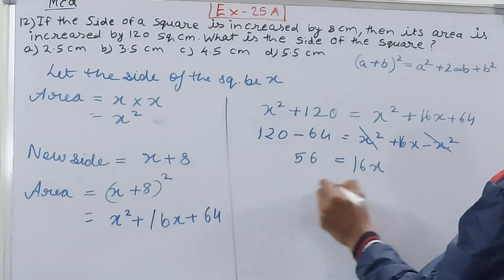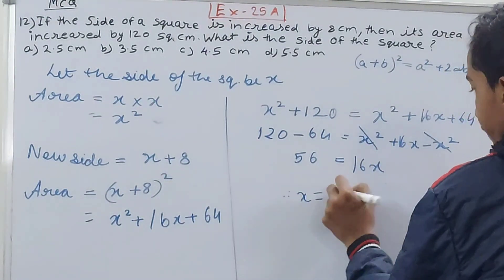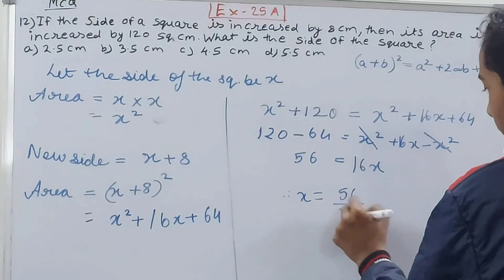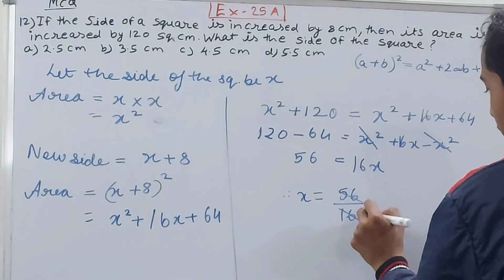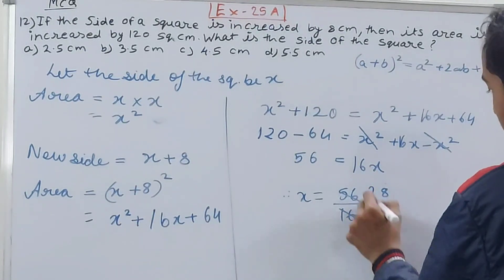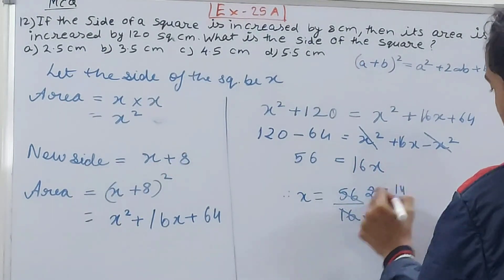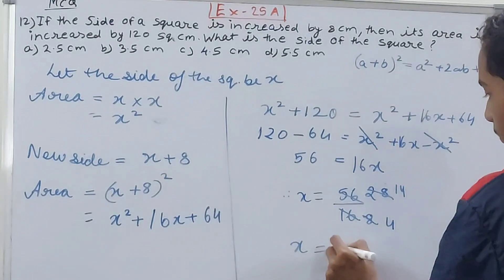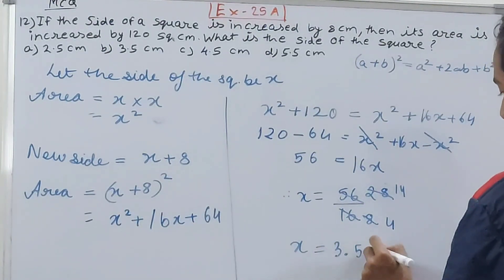56 equals, x squared minus x squared cancel, so 16x. Therefore x equals 56 by 16. Simplifying, x equals 3.5 centimeters.